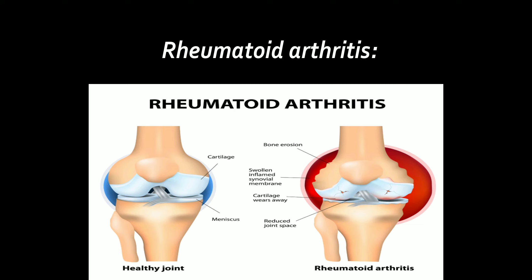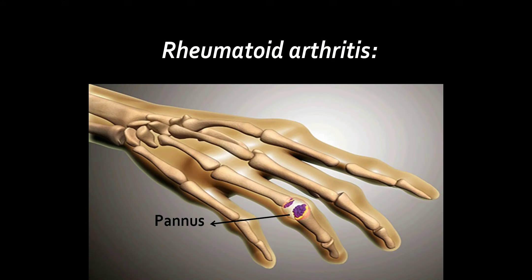Rheumatoid arthritis: It is an autoimmune disorder where the body's immune system attacks its own tissues. The synovial membrane swells up and starts secreting extra synovial fluid, which exerts pressure on the joint and makes it painful. The membrane may develop abnormal granulation tissue called pannus. This pannus may erode cartilage, and fibrous tissue gets ossified, leading to stiffness in joints.